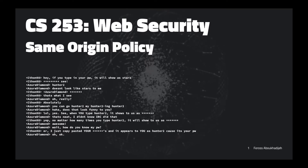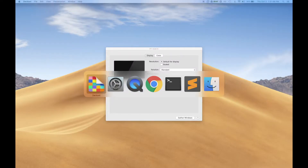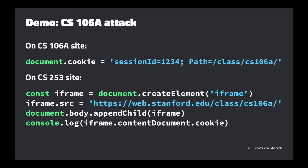Today we're going to focus on the same origin policy, but first I want to finish up what we didn't finish last time — a bit of stuff on cookies. If you remember, we demoed setting a cookie on the 106a website, and then on the 253 site we were able to read the cookie, even though when we set it we specified it should only be accessible to the 106a site. That was because of the same origin policy and how it lets the 253 site access the DOM of the 106a site.